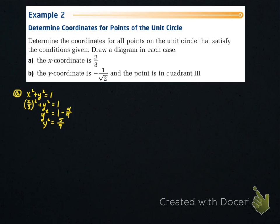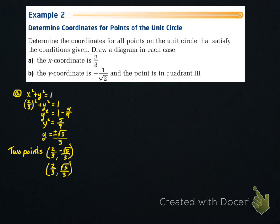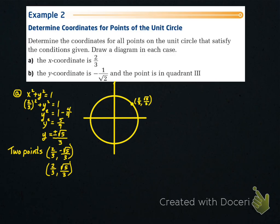Taking the square root of both sides, y = ±√5/3, since √9 = 3. There are two points: (2/3, √5/3) in the first quadrant, and (2/3, -√5/3) in the fourth quadrant.